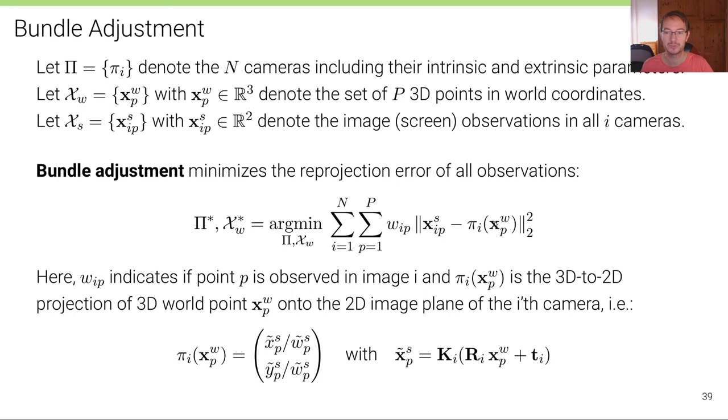This is the point in world coordinate. This is the point, the correspondence in screen coordinate. And we minimize that with respect to all the cameras. That includes, in particular, the extrinsic parameters, but you can also optimize or fine tune the intrinsic parameters, as well as the 3D feature locations.